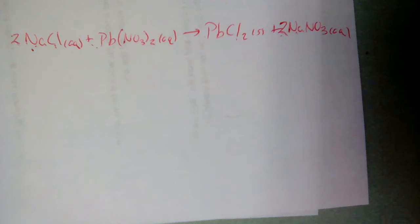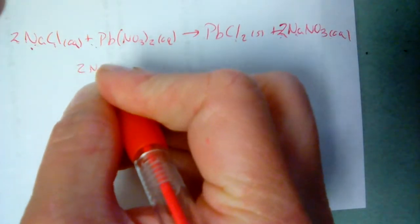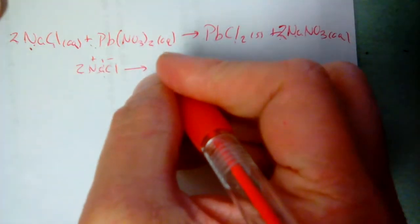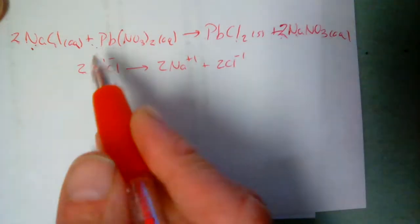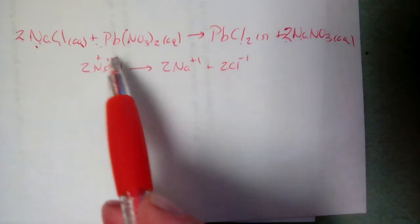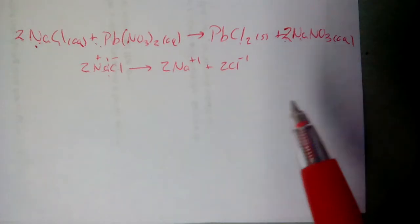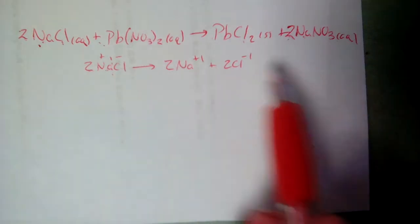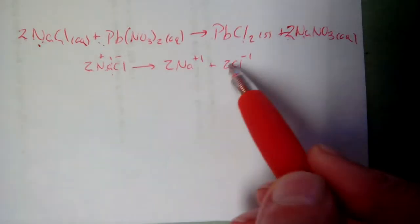Once you have the balanced equation, dissociate all the aqueous solutions. Anything with an (aq) label gets broken into ions. The 2 NaCl breaks down into 2 Na⁺ and 2 Cl⁻ — whenever you have a coefficient, it applies to both ions. The number of atoms must be the same on both sides: 2×1 = two sodiums, 2×1 = two chlorines. Charges cancel: 2×(+1) = +2, and 2×(−1) = −2.